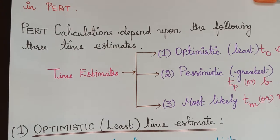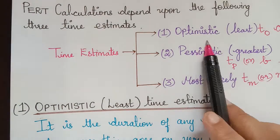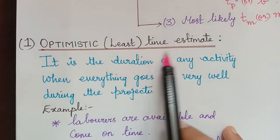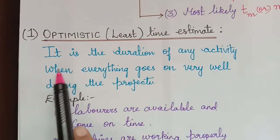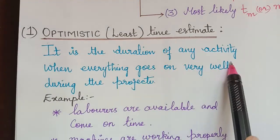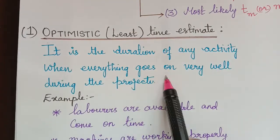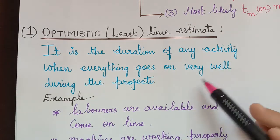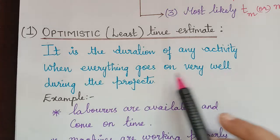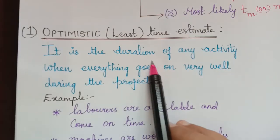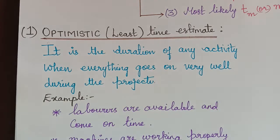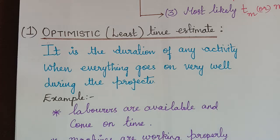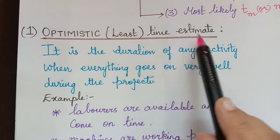We shall see each one in detail. The optimistic time estimate, also known as least time estimate, is the duration of any activity when everything in the project goes on very well — there are no shortages and no disturbances. In such a project it is known as optimistic time estimate, or the project can be completed in the least time, so it is also known as least time estimate.